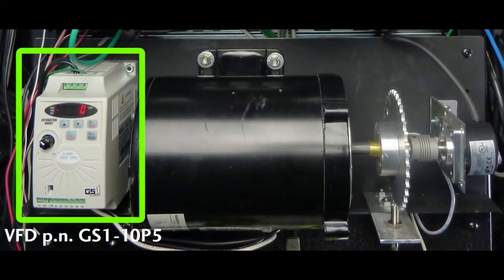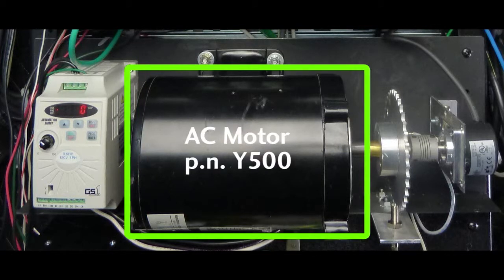For this demo, we're using this variable frequency drive, or VFD, to drive an AC motor with a 36 tooth sprocket on it completely independent of the Productivity 3000.